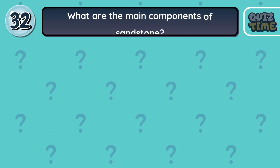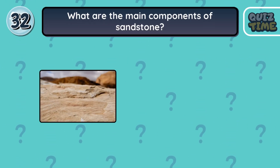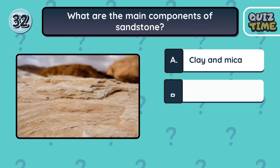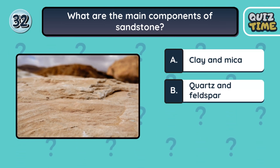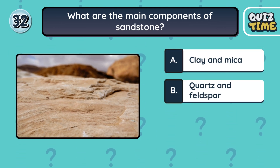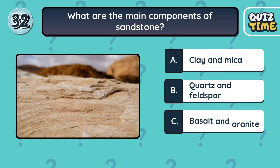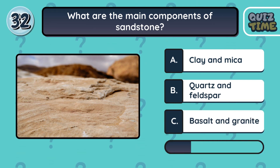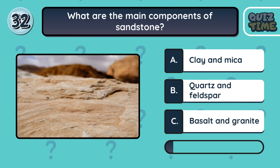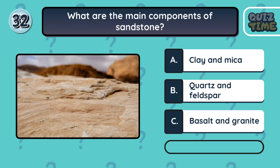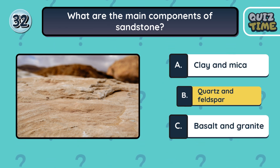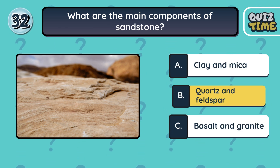Number 32. What are the main components of sandstone? A. Clay and mica. B. Quartz and feldspar. C. Basalt and granite. The correct answer is B. Quartz and feldspar.